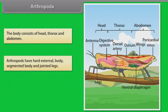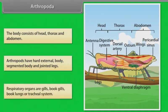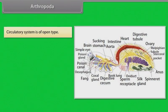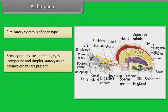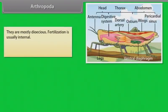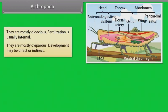Arthropods have a hard external body, segmented body and jointed legs. Respiratory organs are gills, book gills, book lungs or tracheal system. The circulatory system is of open type. Sensory organs like antennae, eyes (compound and simple), and statocysts or balance organs are present. Excretion takes place through Malpighian tubules. They are mostly dioecious, fertilization is usually internal, and they are mostly oviparous. Development may be direct or indirect.